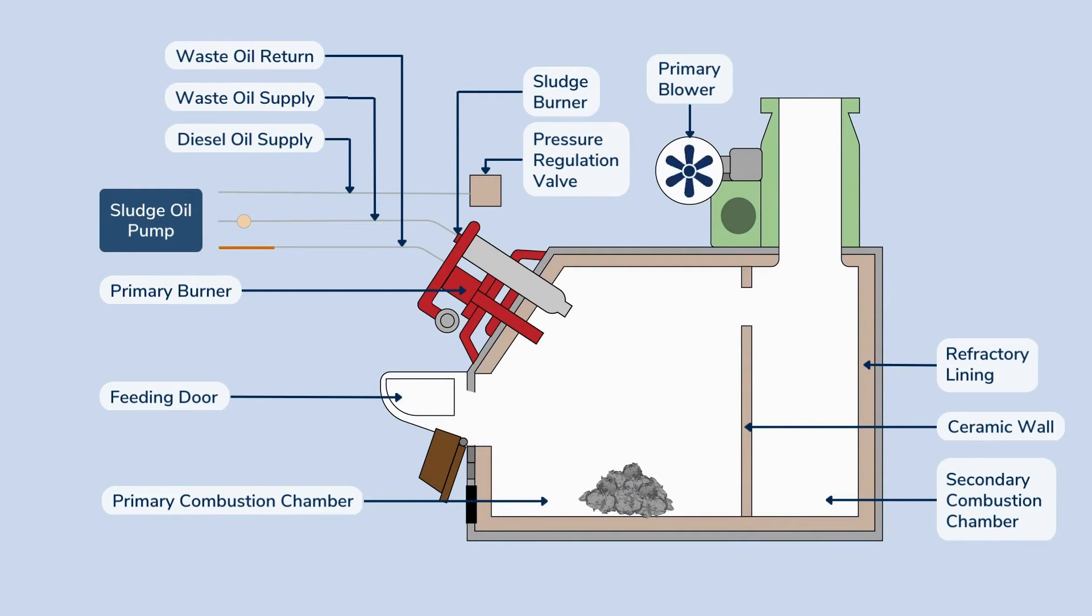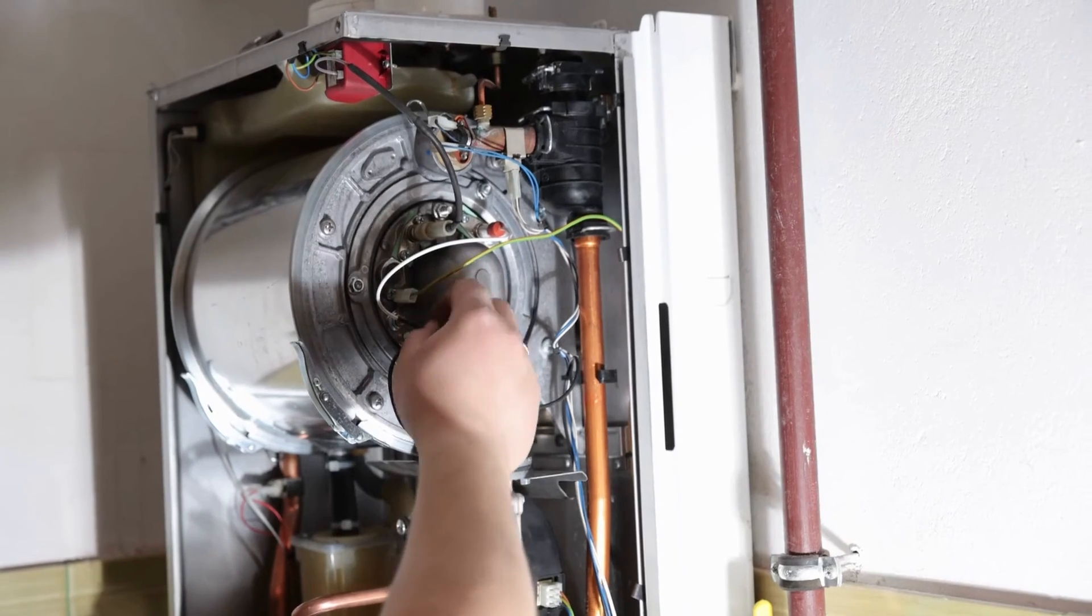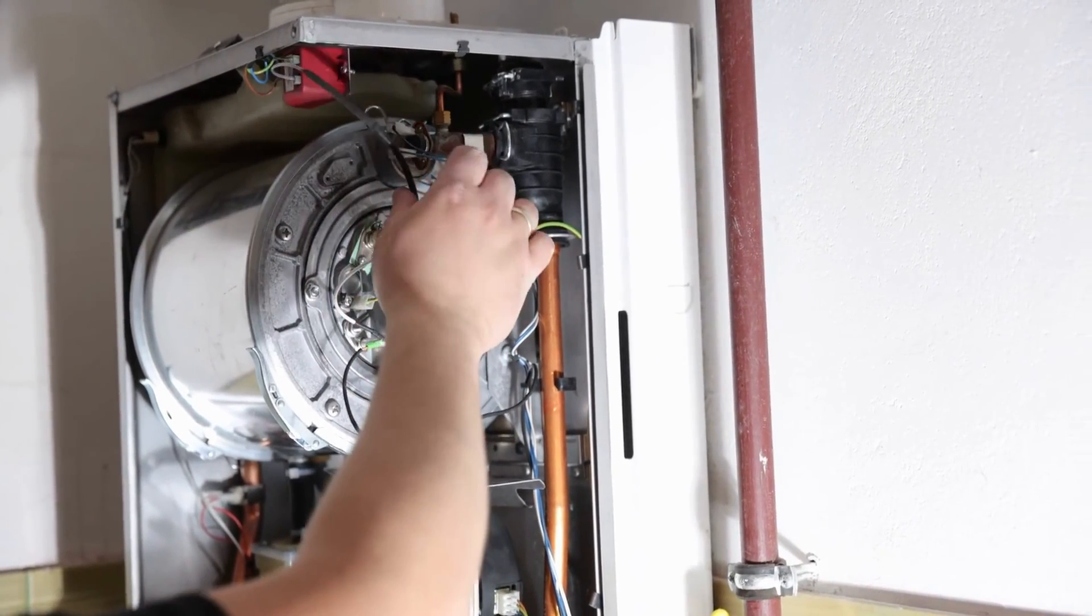When burning solid waste, first make sure it is safe to open the loading door. Open the door and feed the solid waste from there. There is a safety switch which cuts off the primary burner when the door is open, hence before the operation make sure the door is properly shut. The heat inside the chamber will burn the solid waste.